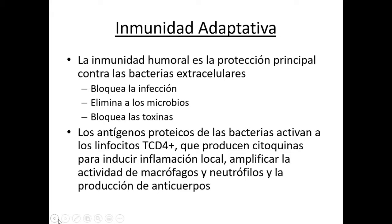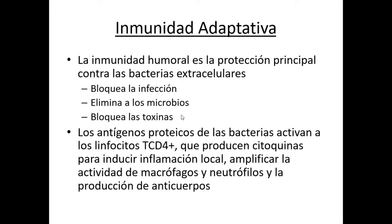En la inmunidad adaptativa, está la respuesta mediada por anticuerpos. El anticuerpo tiene como función principal neutralizar el antígeno, que debe ser neutralizado en la medida que se encuentre fuera de las células. Las bacterias libres van a poder formar complejos con los anticuerpos y estos a su vez los van a neutralizar. Los complejos inmunes también pueden activar la vía clásica del complemento, y estos complejos inmunes opsonizados pueden ser reconocidos por los fagocitos para removerlos y destruirlos.